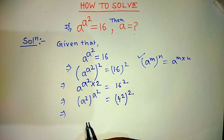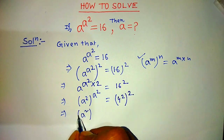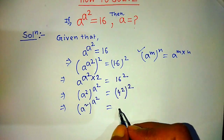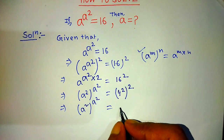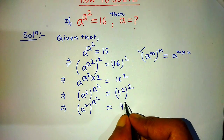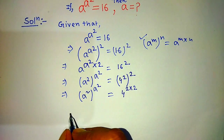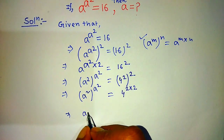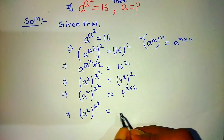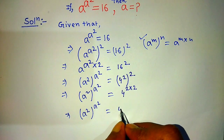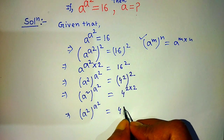On the left hand side, we write a squared whole to the power a squared. On the right hand side, we apply the formula and write 4 to the power 2 into 2. So on the left hand side, a squared whole to the power a squared, is equal to on the right hand side, 4 to the power 2 into 2 — that means 4 to the power 4.